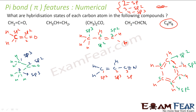To find hybridization, just count how many other atoms a particular carbon is attached to — carbon, nitrogen, oxygen, it doesn't matter. Just count the number of atoms attached, and based on that you can tell the hybridization of the carbon atom.